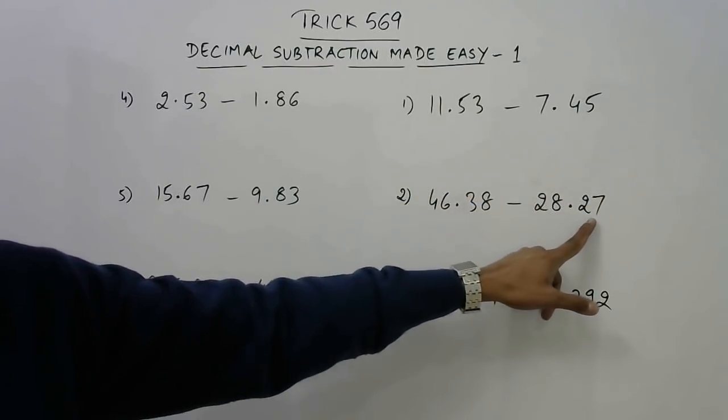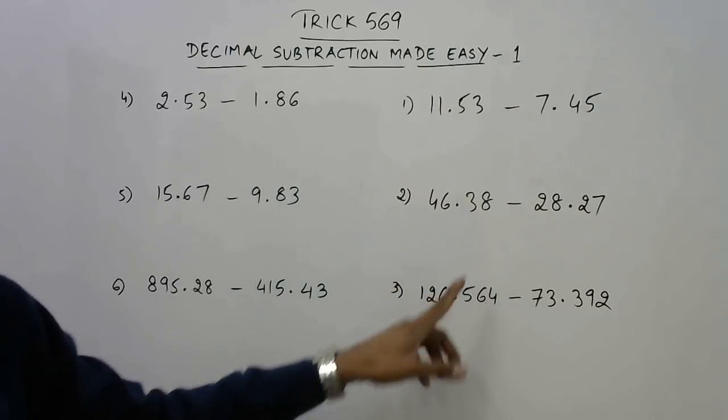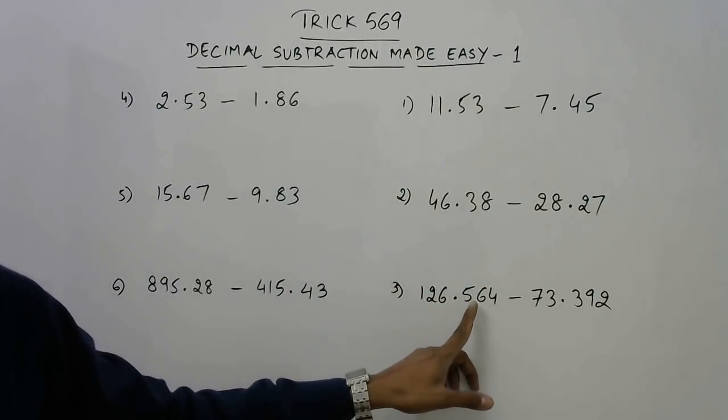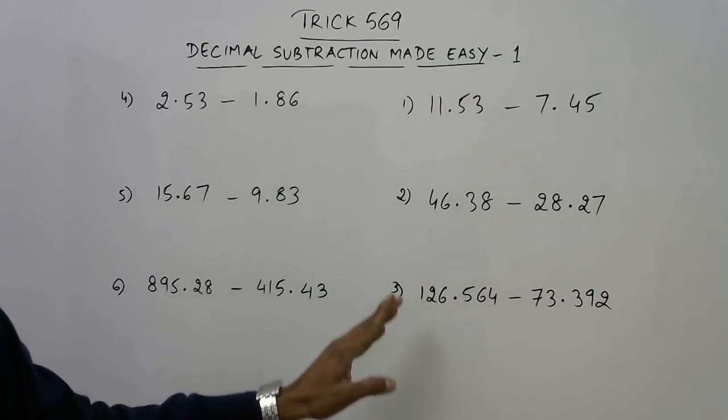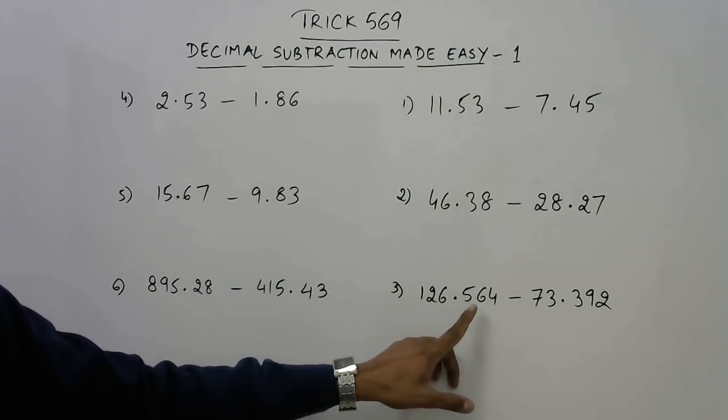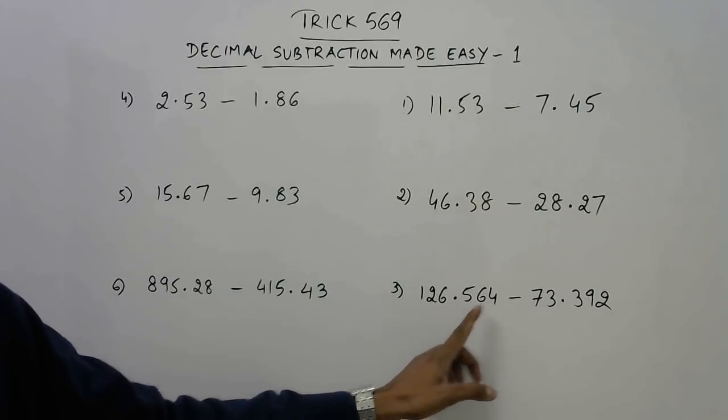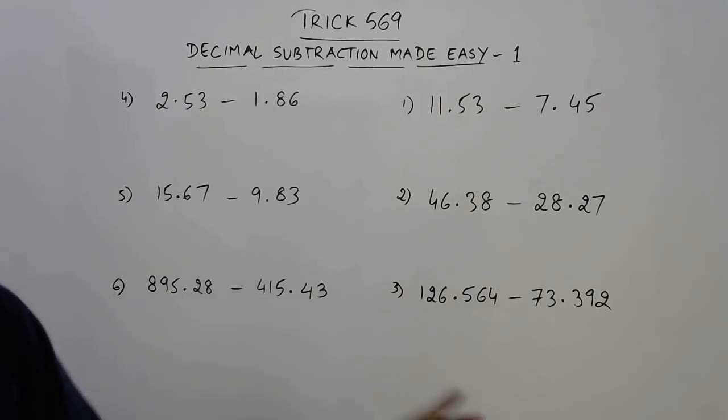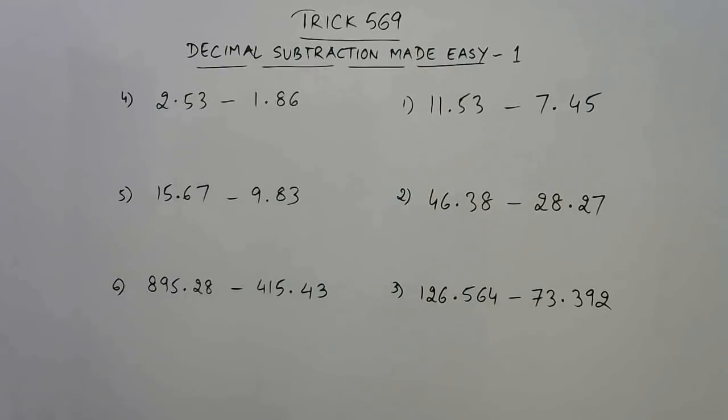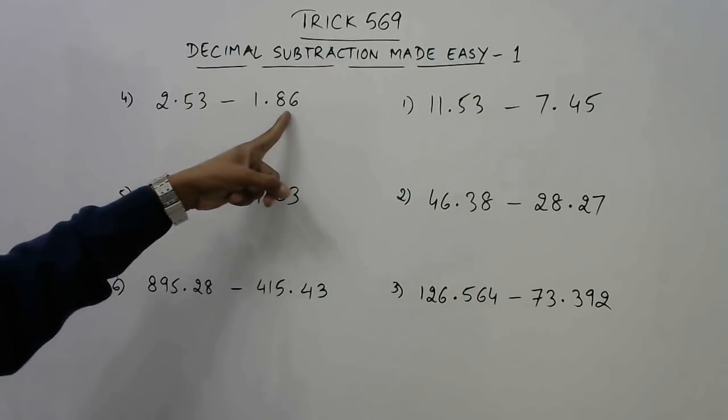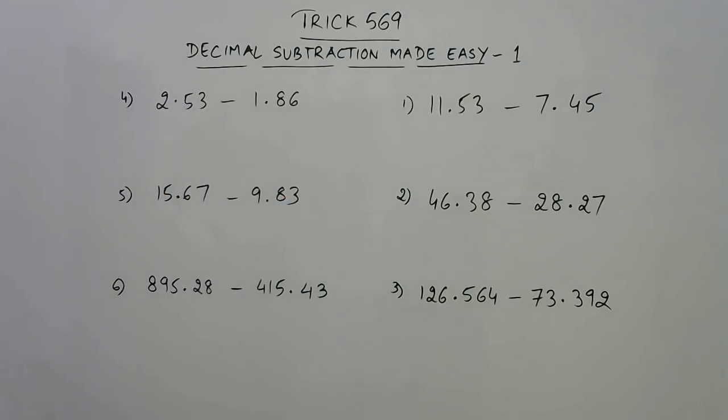These questions where the number after the decimal in the first number is greater than that of the second number are calculated using a particular method. But what happens when this number 53 becomes less than this number 86? Now the method changes.